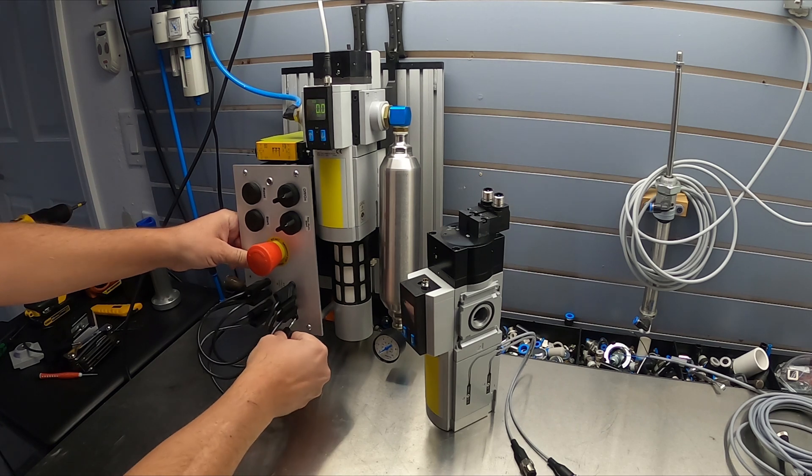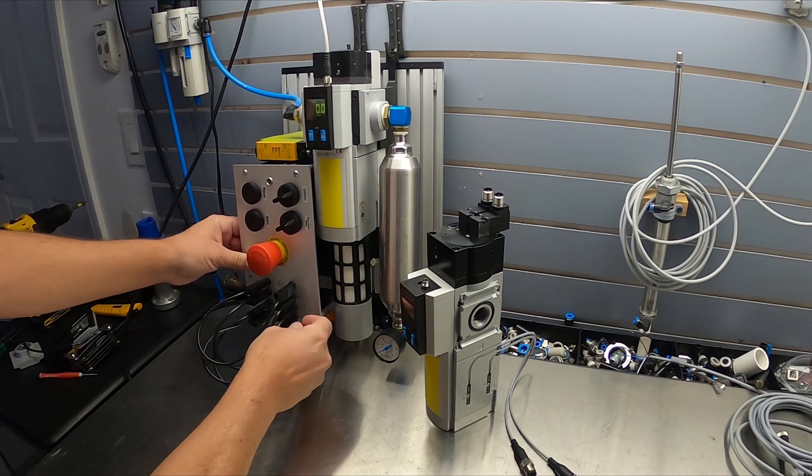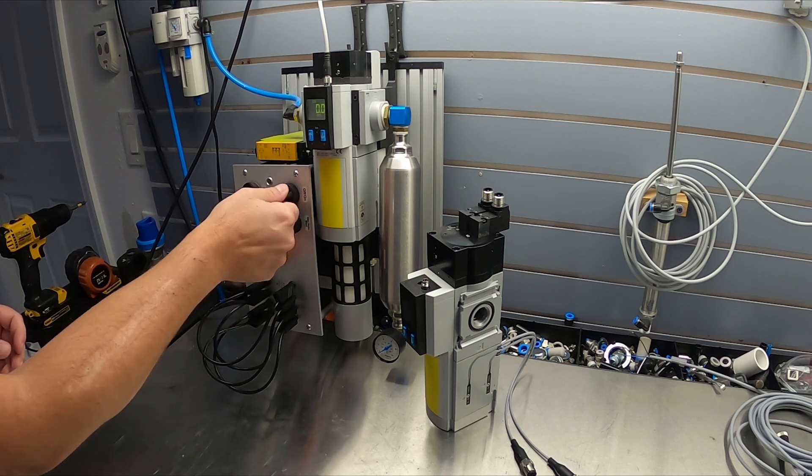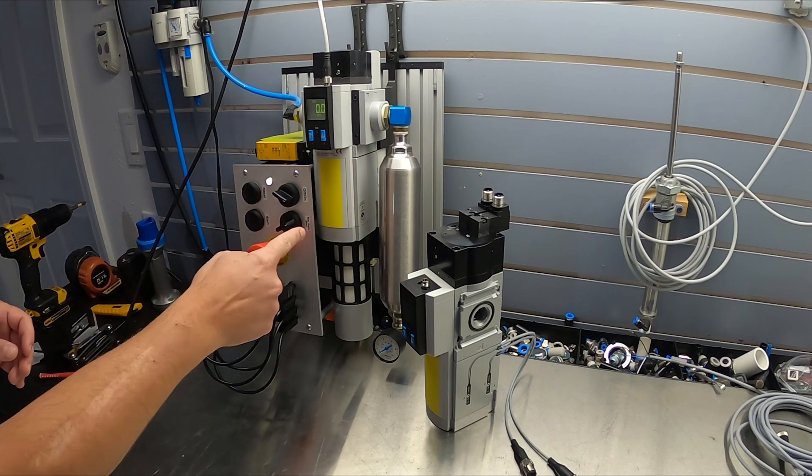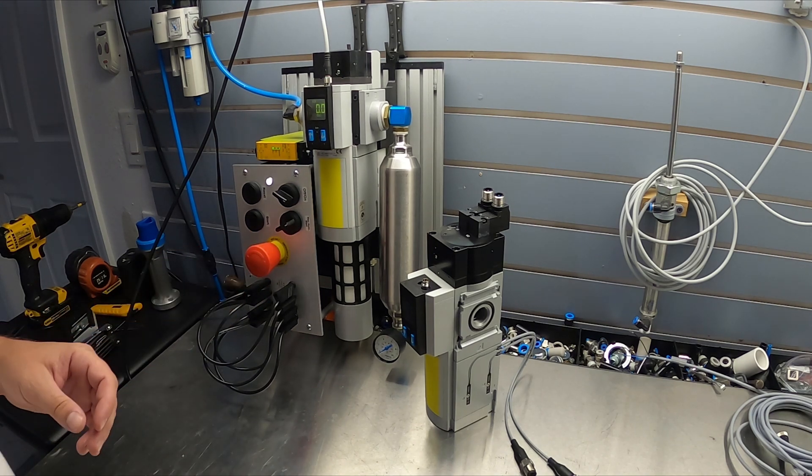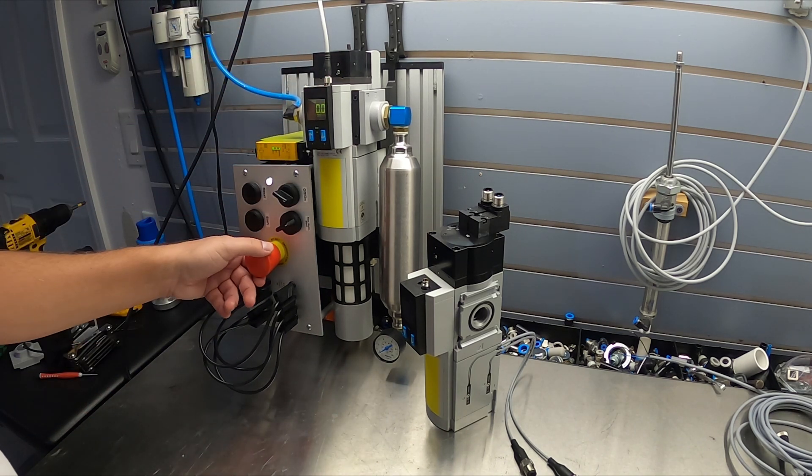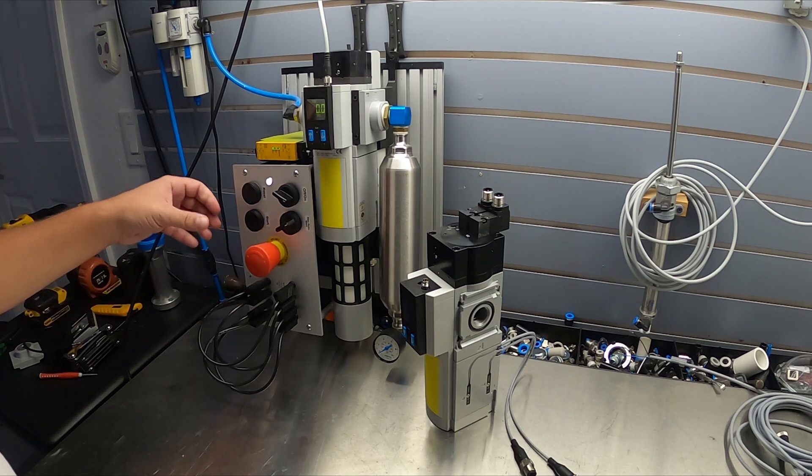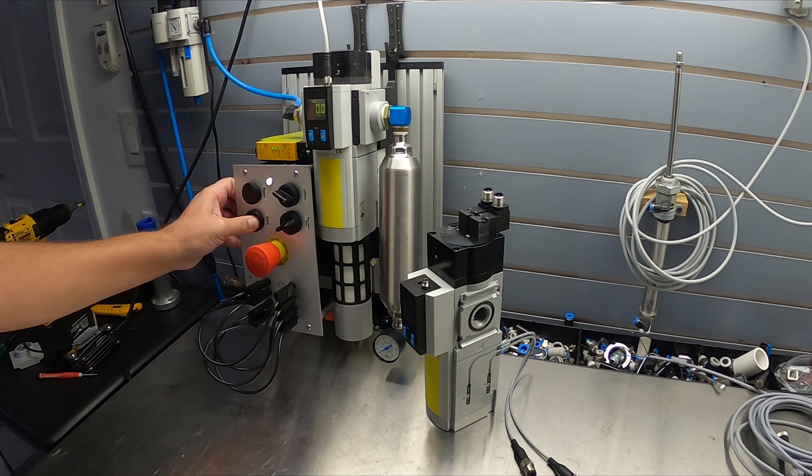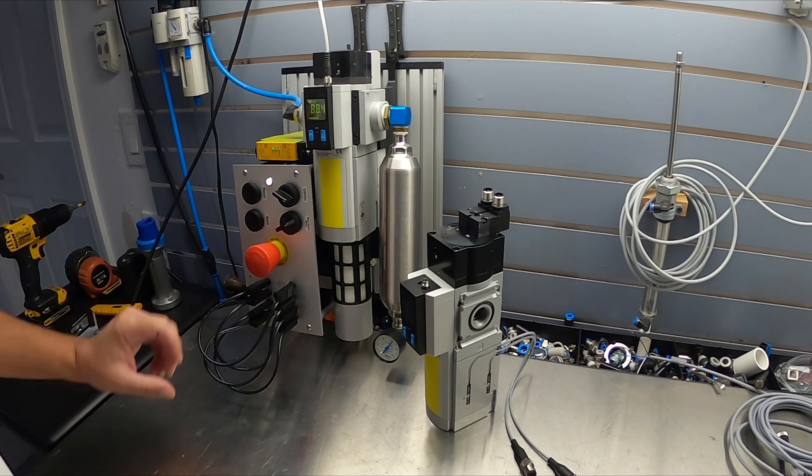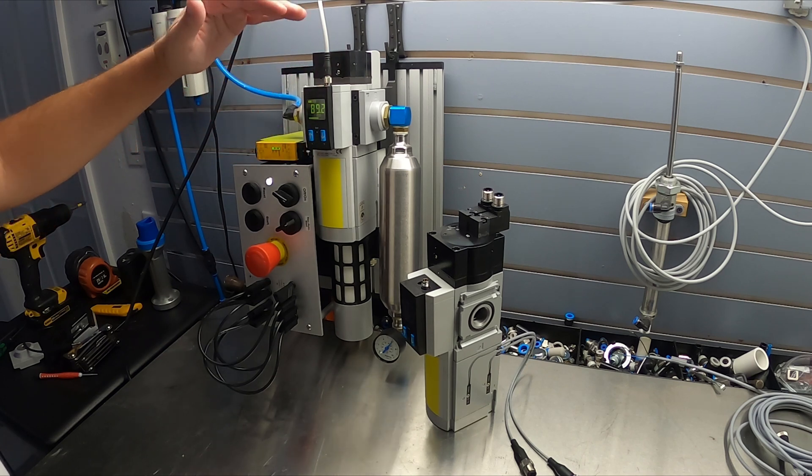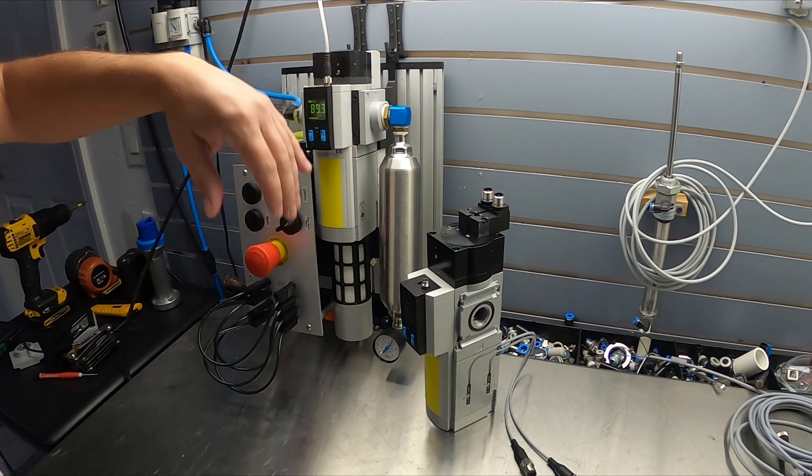So right now I'm gonna turn the power back on and I have it in manual mode. So it does its little self-check. The E-stop's cleared. So right now I have to manually start it. If you can see on the gauge, it went up to 89 PSI. So basically, as soon as I press start, power went to the system.